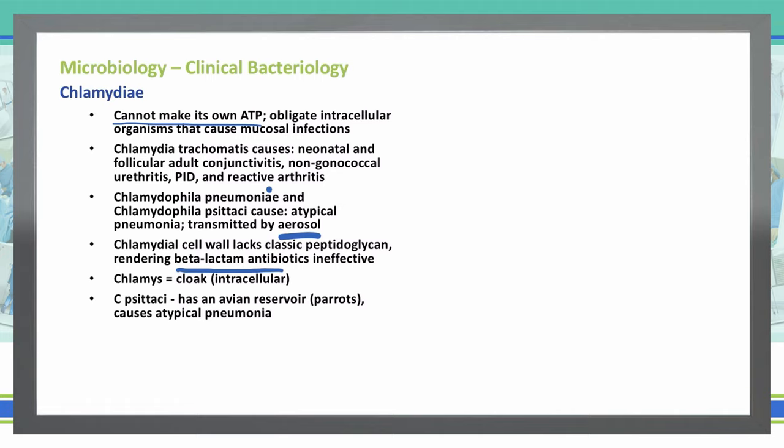Chlamydia psittaci has an avian reservoir, so it comes through parrots. Remember that psittaci comes from parrots, and it causes atypical pneumonia.